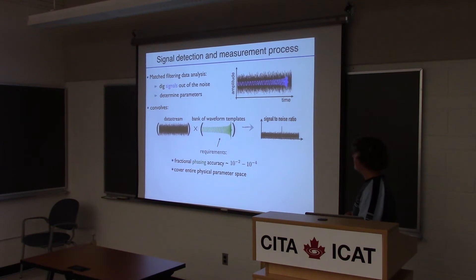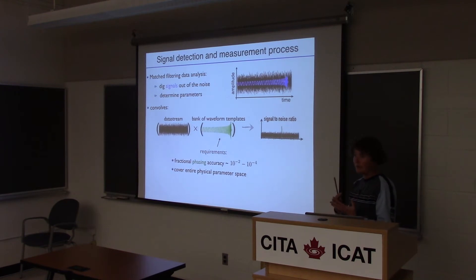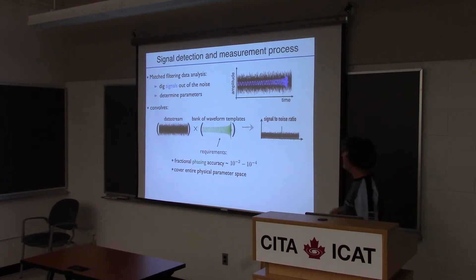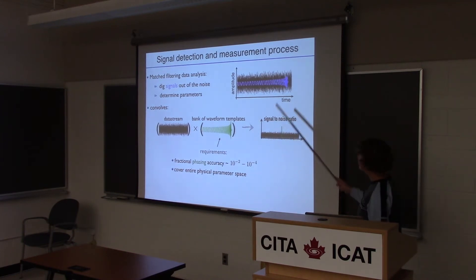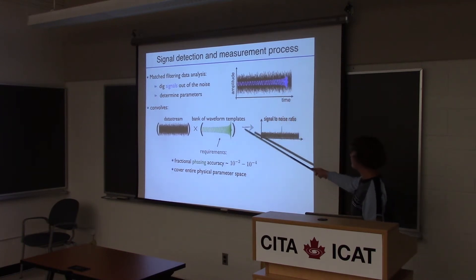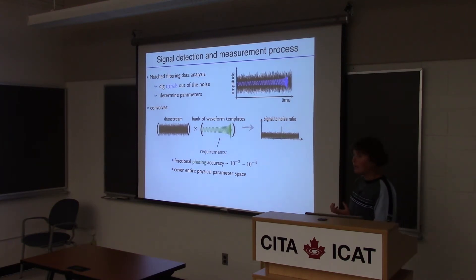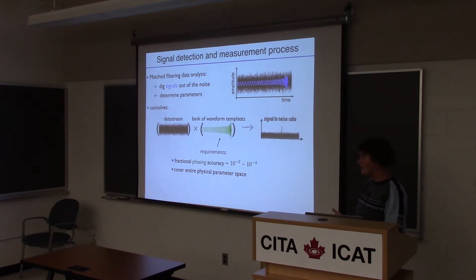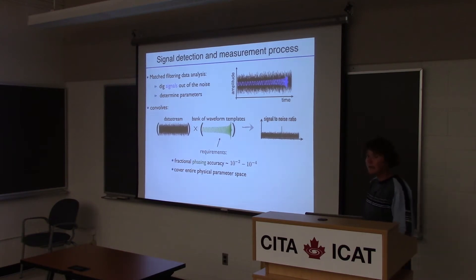The idea is to have a bank of theoretical waveform templates that depend on all kinds of different parameters — a parameterized bank of waveforms. The data stream is passed through this bank and convolved with it, so that if there is a signal present in the data, when you convolve it with this bank with varying parameters, at some point for some choice of parameters there might be a peak in the signal-to-noise ratio. That would tell you a signal was present and also which parameters it had.